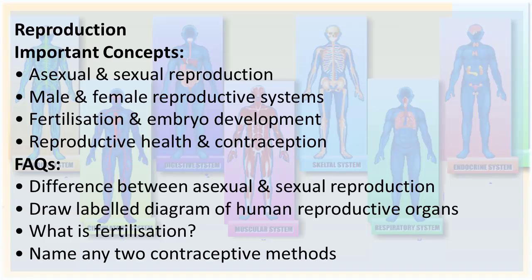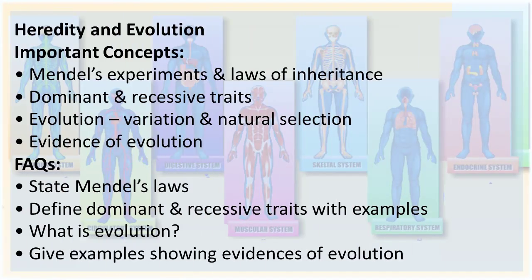From Reproduction, important concepts are asexual and sexual reproduction, male and female reproductive systems, fertilization and embryo development, reproductive health and contraception. A FAQ is: name any two contraceptive methods.